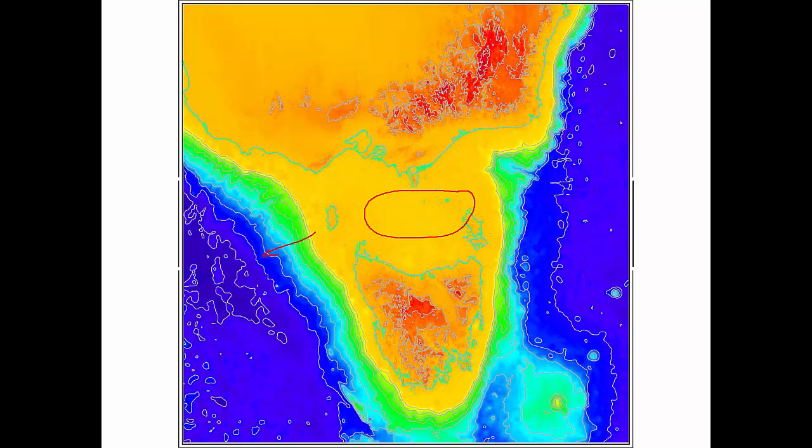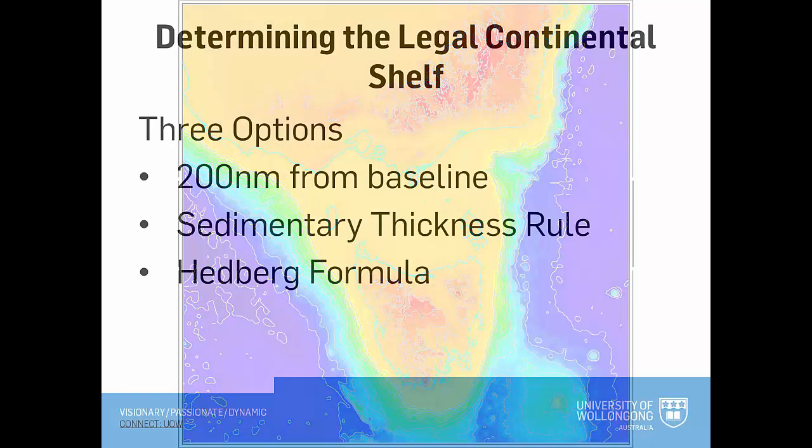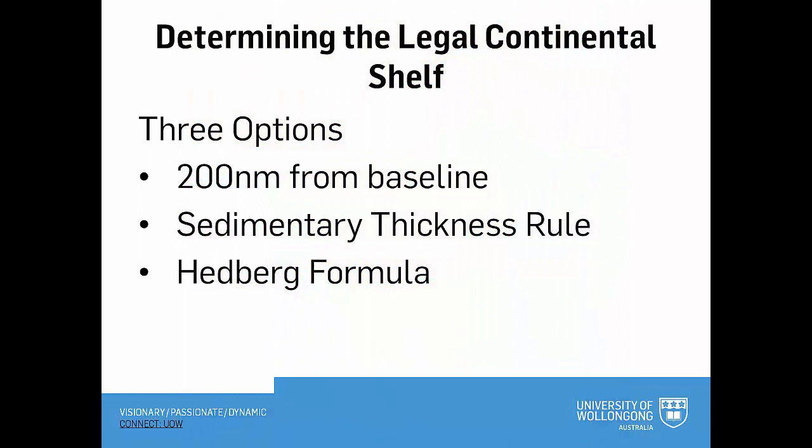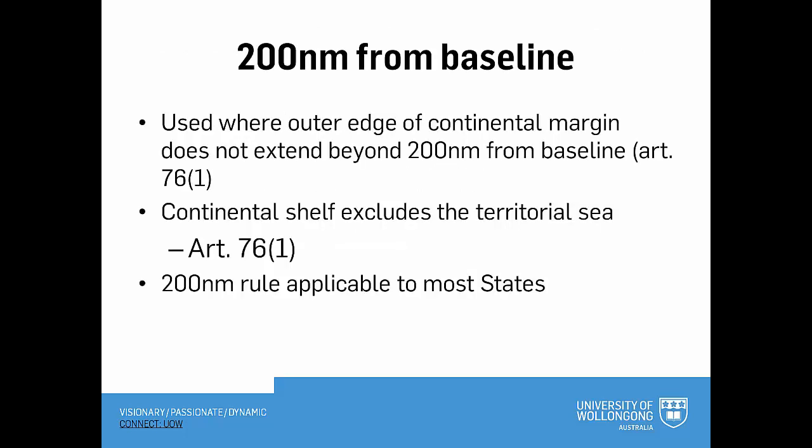The Law of the Sea Convention reflects the extension of this shelf beyond 200 nautical miles. There are three options for determining the legal extent of the continental shelf: 200 nautical miles from territorial sea baselines, and then separate calculations for beyond 200 nautical miles based on sediment thickness or a formula developed by the American Hollis Hedberg. 200 nautical miles from baselines is relatively straightforward and is coterminous with the exclusive economic zone.